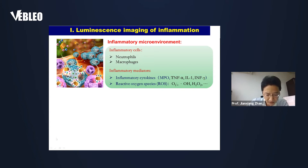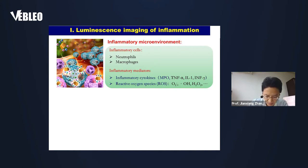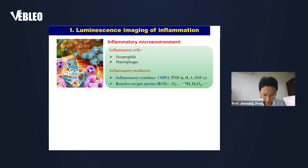As well documented, the inflammatory microenvironment is characterized with infiltration of inflammatory cells, such as neutrophils and macrophages. Also, high expression of inflammatory mediators occurs in the inflammatory microenvironment, including pro-inflammatory cytokines such as MPO, TNF, IFN, interleukin, and interferon gamma. In addition, high expression of reactive oxygen species like superoxide anion, hydroxyl radical, and hydrogen peroxide also occurs in the microenvironment of inflammation.